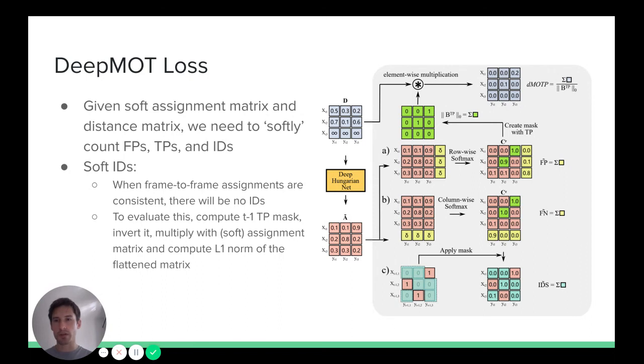To compute the number of ID switches, we can do the following. We compute a binarized true positive mask over previous frame assignments. To get the count of the number of ID switches, we will invert this matrix. And then, by multiplying this inverted true positive matrix with soft assignment matrix and computing L1 norm of this flat matrix, we will get a soft estimate of number of ID switches.